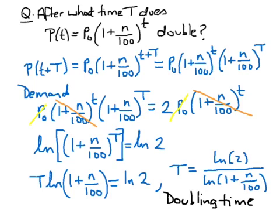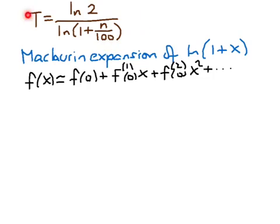Next, we want to approximate this exact formula for n not very large compared to 100, using the Maclaurin expansion of ln(1 + n/100). The Maclaurin expansion formula approximates a function f(x) by f(0) plus f'(0)·x plus the second derivative at 0 times x squared, and so on.